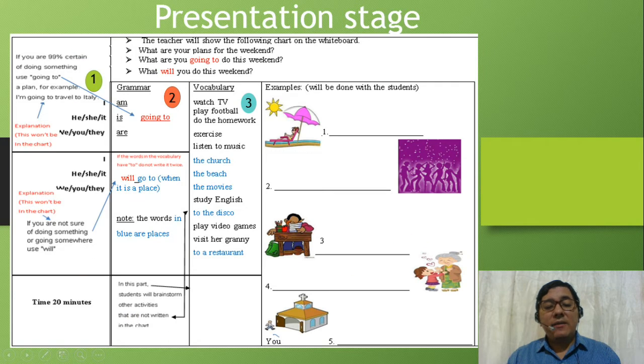As you can see, I've divided the chart into three sections. I'll tell them in order to answer the previous questions, we have to follow these three steps. First, we need one of the pronouns: I, he, she, we, you, they. Second, we need either the verb be plus going to, or will plus a verb plus a complement, which is the vocabulary part. And that'll be all. After that, I will tell them when they are going to use going to.